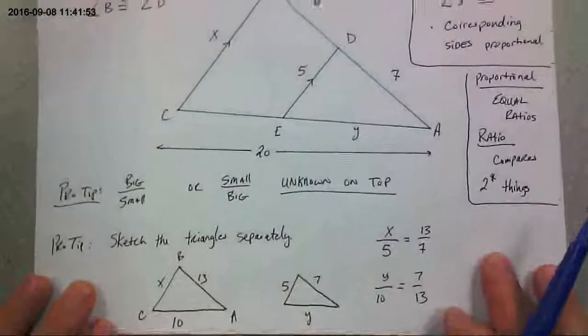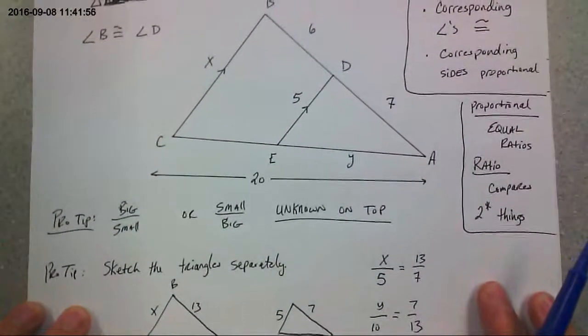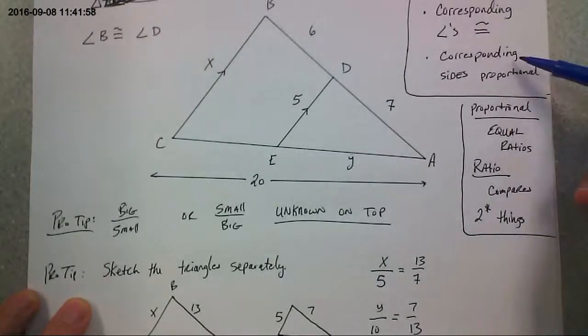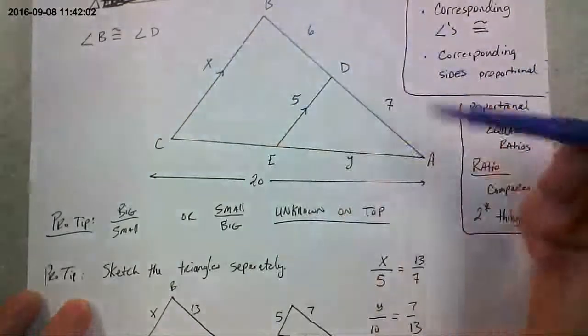Alright, so what we're gonna do is we're gonna use this consequence right here. Corresponding sides are proportional to solve for X and to solve for Y.